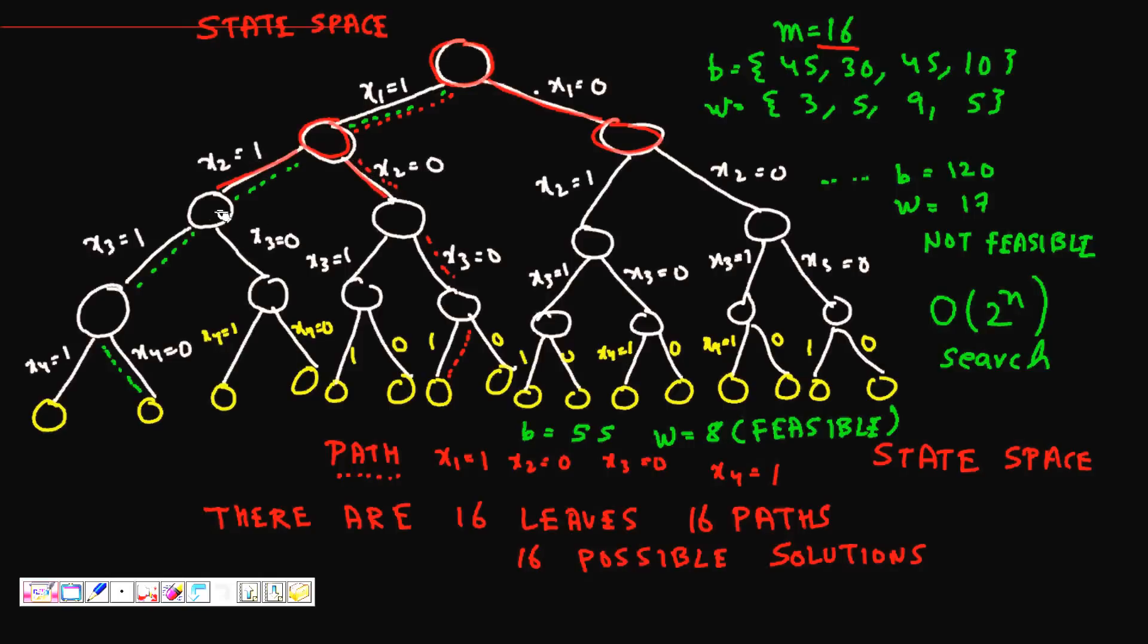If I come to the third level, it means for this path x1 is 1, x2 is 1, I have chosen the first two items. x3 equals 1 means I have chosen the first three items. x3 equals 0 means I have not chosen the third item. So this path represents item one and item two are chosen, item three is not chosen. Similarly, this leaf node means I have chosen the first two items, I have not chosen item three and item four.